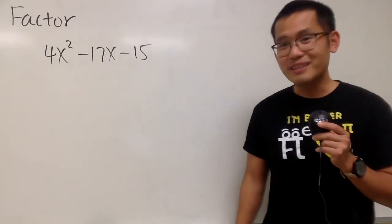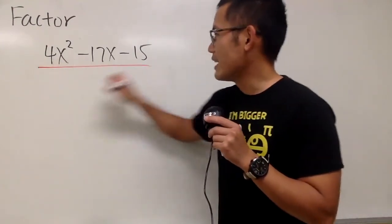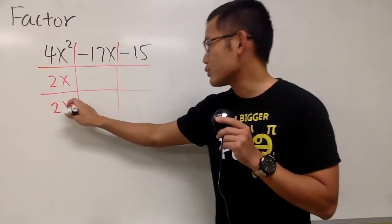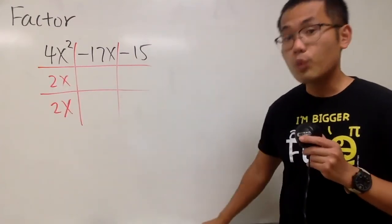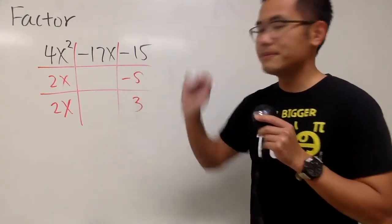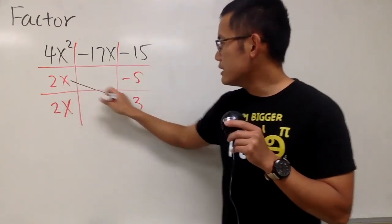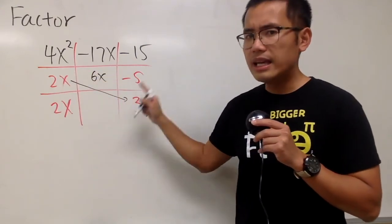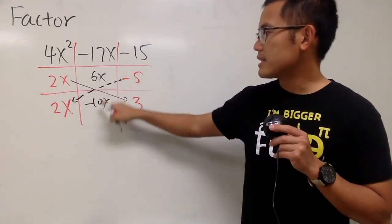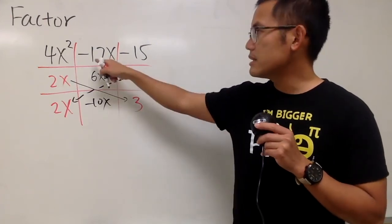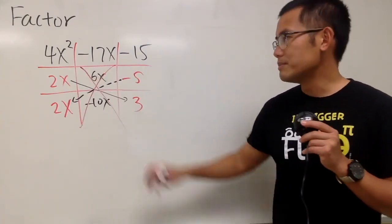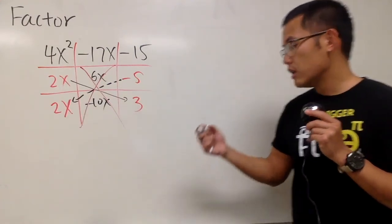We are going to factor this — it has three terms so we use the tic-tac-toe method. To produce 4x squared, try 2x times 2x. To produce negative 15, try negative 5 and positive 3. Check: 2x times 3 is 6x, and negative 5 times 2x is negative 10x. Unfortunately, 6x minus 10x is not the same as negative 17x — so this combination is not correct. Let's try again.